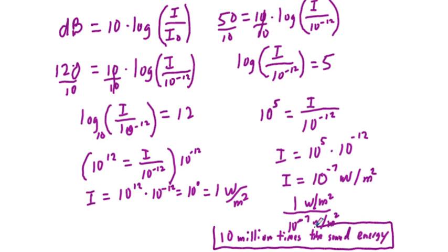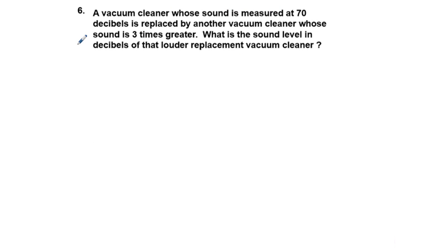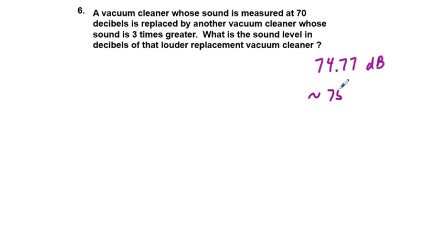That's a lot — and of course it really shows how compressed this logarithmic scale is. I won't work out problem 6 in detail, but I'll tell you the answer: a 70-decibel vacuum cleaner replaced by one whose sound intensity is 3 times greater gives a sound level of approximately 74.77 decibels, roughly 75 decibels. Good luck on all the even-numbered problems to demonstrate your learning, and thank you for viewing.